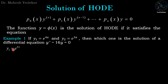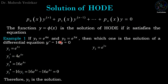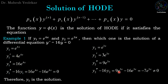For y₁ = e^(4x): y₁' = 4e^(4x), y₁'' = 16e^(4x). Substituting: 16e^(4x) - 16e^(4x) = 0. So y₁ satisfies the equation and is a solution. For y₂ = e^(3x): y₂' = 3e^(3x), y₂'' = 9e^(3x). Substituting: 9e^(3x) - 16e^(3x) = -7e^(3x) ≠ 0. So y₂ is not a solution.